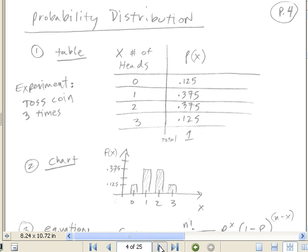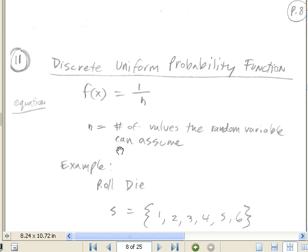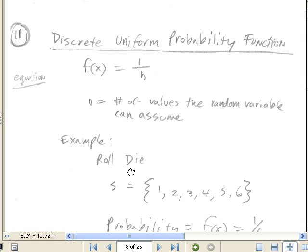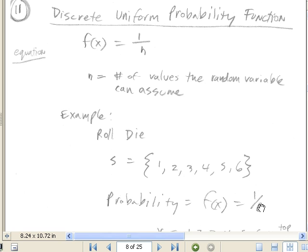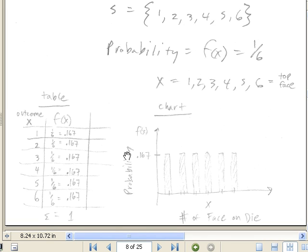Here's one that we see in this chapter. This is for uniform probability function. It's just 1 over n, the number of values that the random value can assume. Great example for this is rolling the die. 1, 2, 3, 4, 5, 6. Each one has the same probability. So f(x) for the probability equals 1 divided by the count, 6. If we were going to do it in a chart, it would look something like that. If we're going to do it in a table, it would look something like that. We had a homework problem in last chapter just like that.